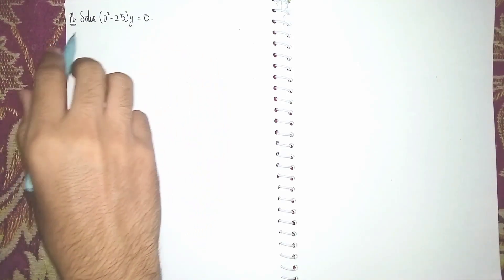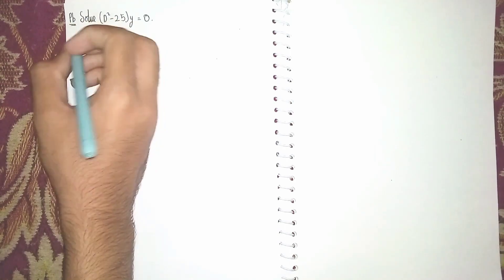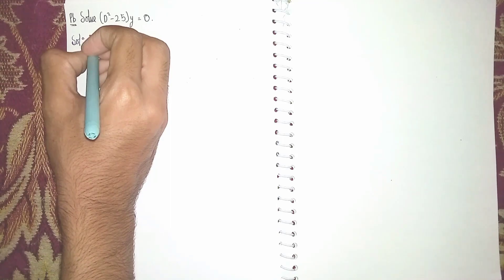Hello students, welcome back to my channel. Today's question is solve d square minus 25 into y is equal to 0. This is a homogeneous linear differential equation. First, write the given equation.